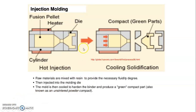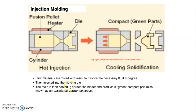In injection molding, the raw material is mixed with resin to provide the necessary fluidity degree, then injected into the molding die. After injection, the molding is cooled to harden the binder and produce a green compact.